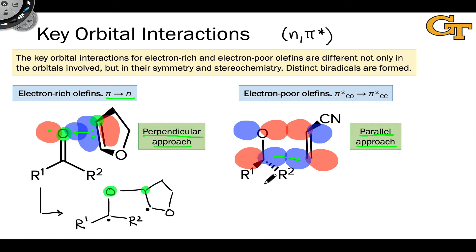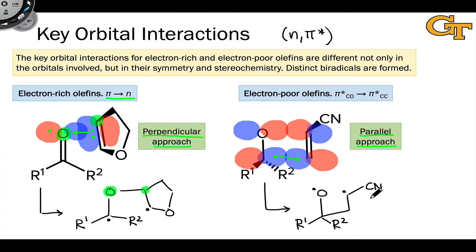In the reaction with the electron-poor olefin, it is the carbonyl carbon involved in the interaction, so we expect a carbon-oxygen diradical to form, with one radical center on the carbonyl oxygen and the other on the atom adjacent to the electron-withdrawing group in the alkene. The regiochemical outcome is dictated by two things: the largest lobe in the LUMO of the electron-poor olefin is distal to the electron-withdrawing group, and the π* orbital of the carbonyl is predominantly on the carbonyl carbon — giving selective bond formation between the carbonyl carbon and the beta carbon of the electron-poor olefin.